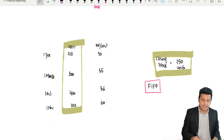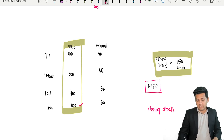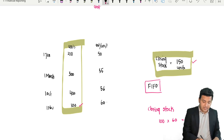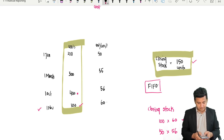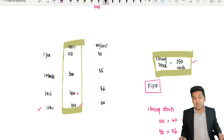Under FIFO method, what do we do? The last inventory remaining — the last 100 units are from the last purchase at 60, so that gives 6,000. We still have 150 units total and have accounted for 100, so the remaining 50 are from the 56 batch — 56 × 50 = 2,800. So closing stock cost = 8,800.